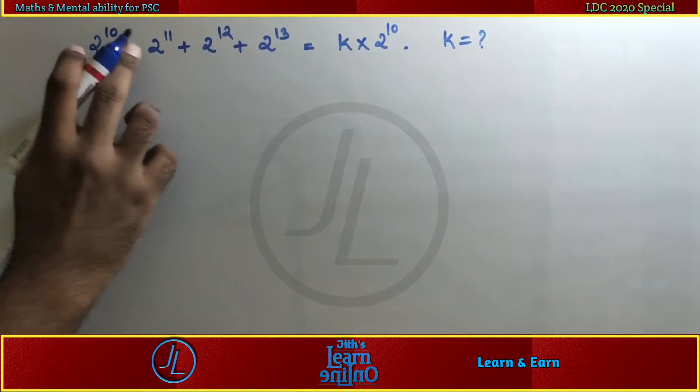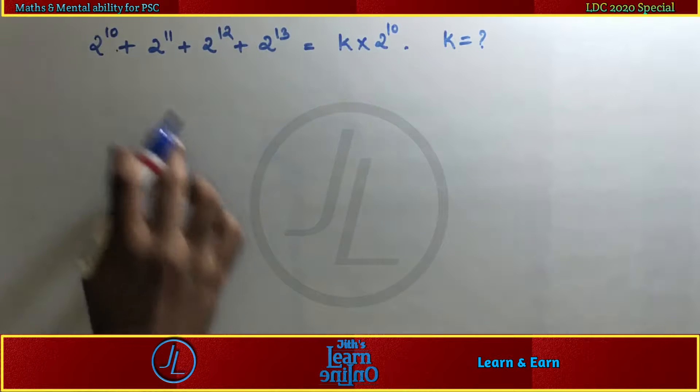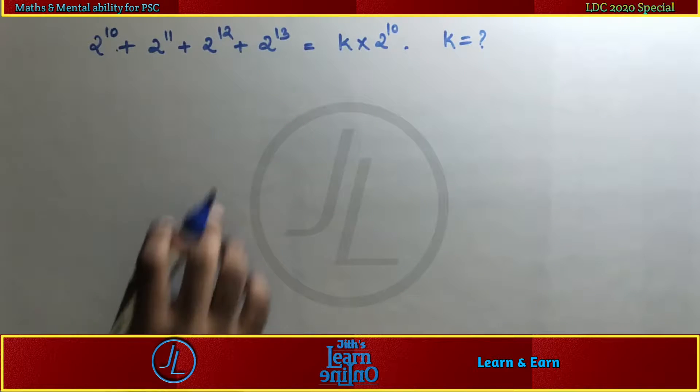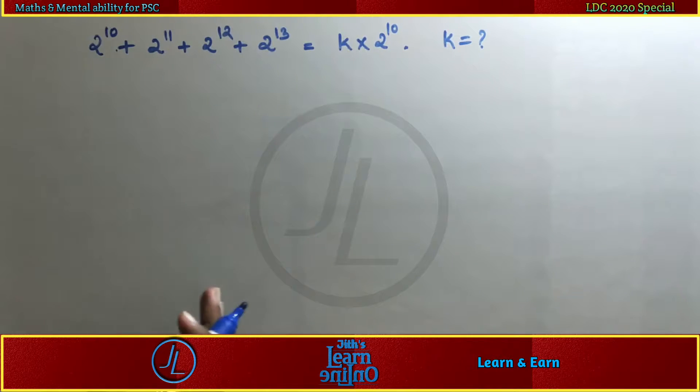2 raised to 10 plus 2 raised to 11 plus 2 raised to 12 plus 2 raised to 13 is equal to k into 2 raised to 10. That's why k is the value of 1 raised to 10.